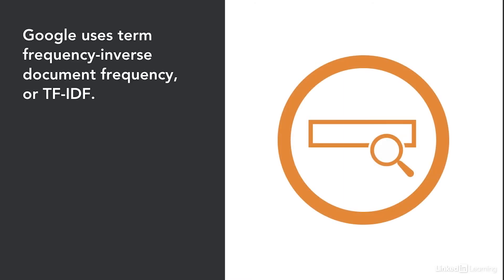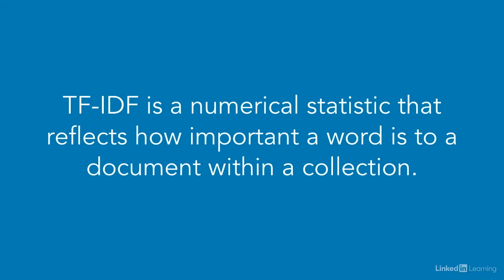Most recently, it's believed that Google uses term frequency, inverse document frequency, to figure out the information on a page and how relevant it is to a search query. We can use the acronym TF-IDF to talk about this.